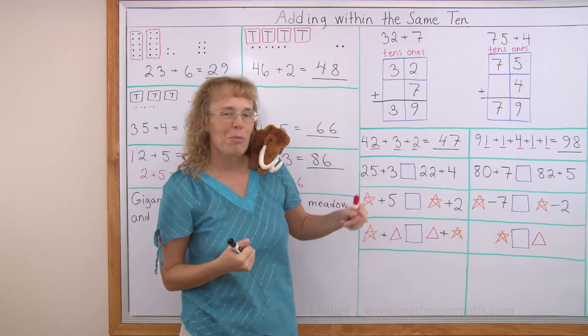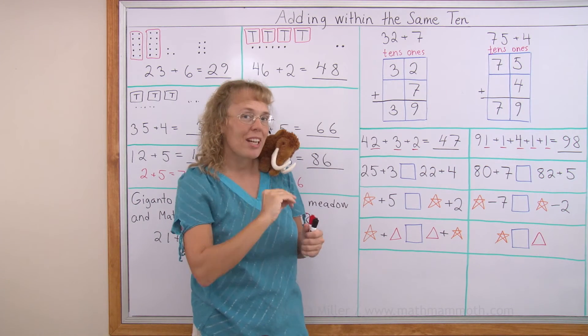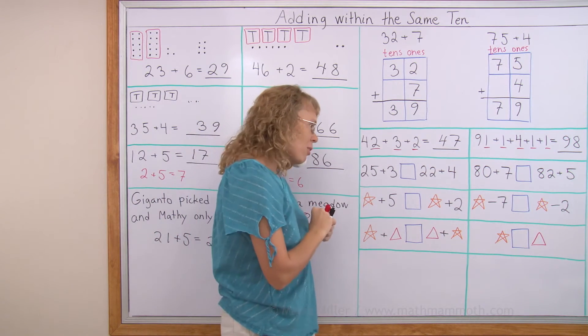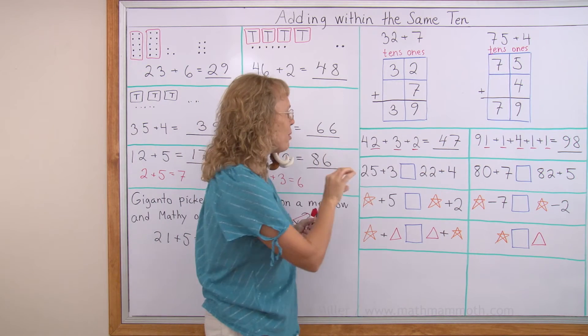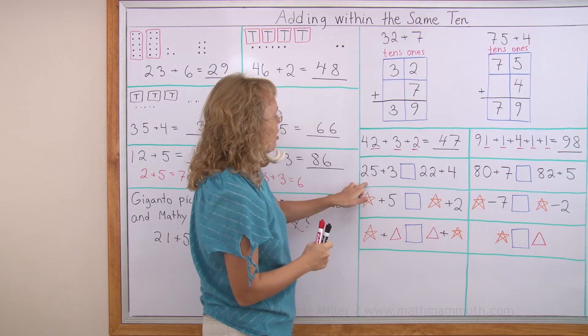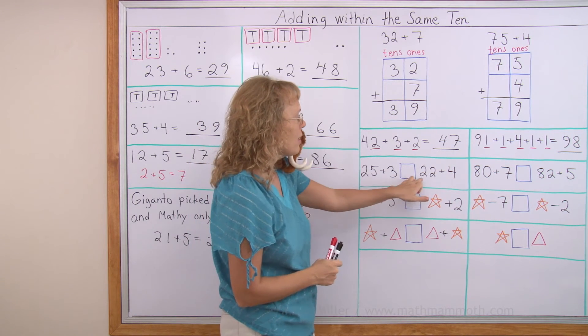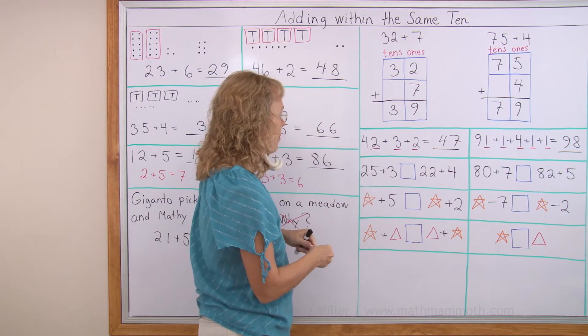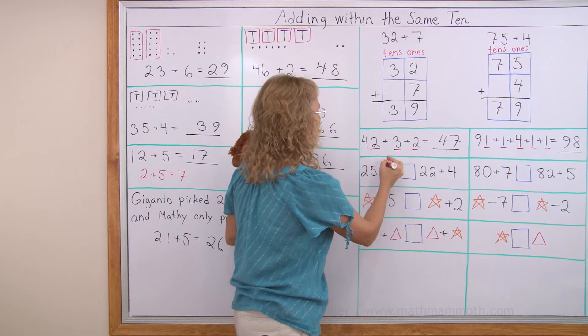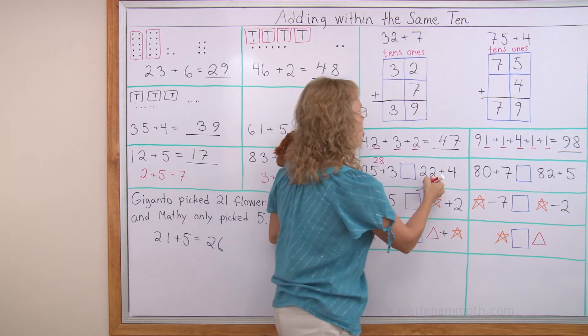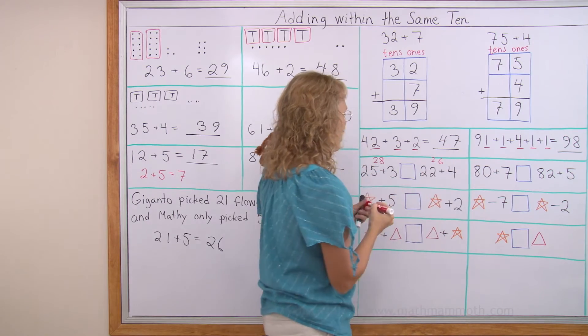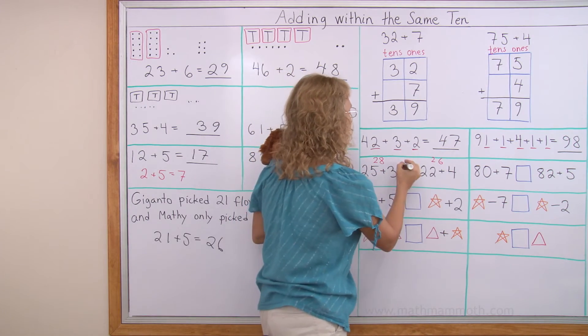Now come these blue boxes. That means we are going to do alligator mouth problems. Oh Mathie says mammoth mouth problems. Yeah. Whatever. Let's first solve what's on this side. 25 plus 3. Is that more than what's on that side? Here 5 plus 3 is 8. And 20. 28. Here 2 plus 4 is 6. And we have 10. 20. So 28 is greater than 26.